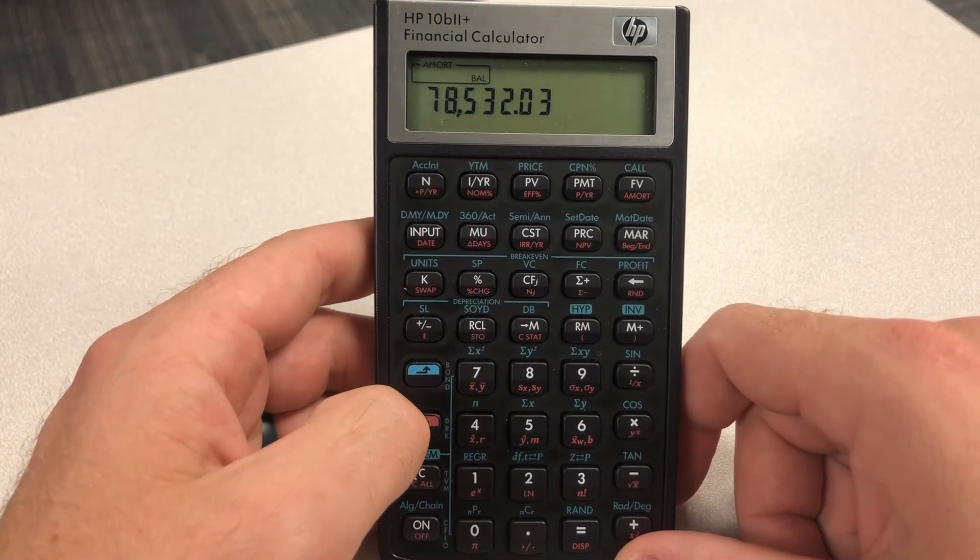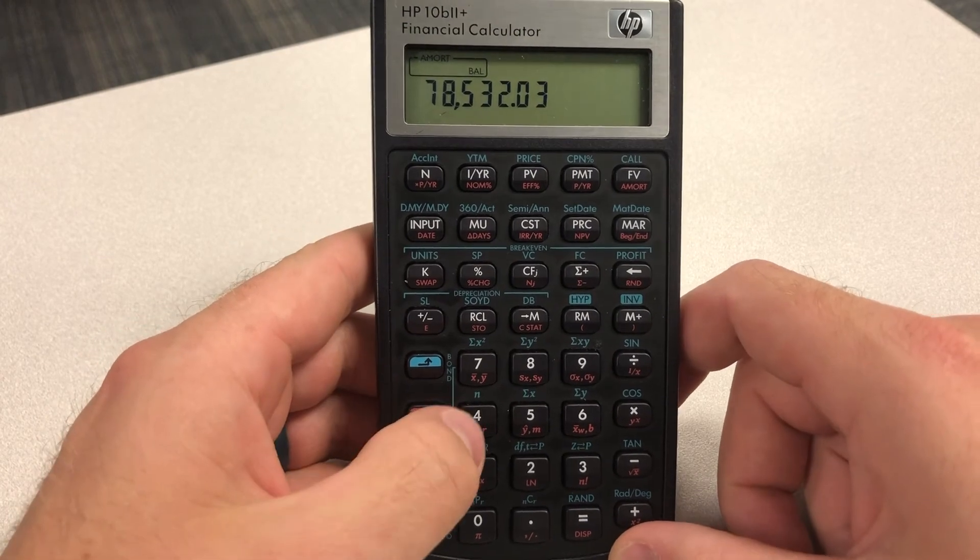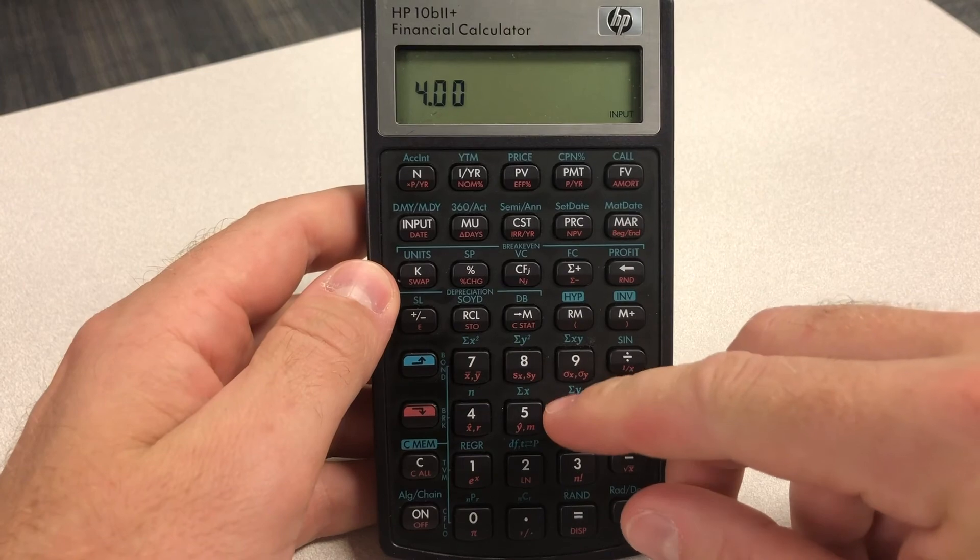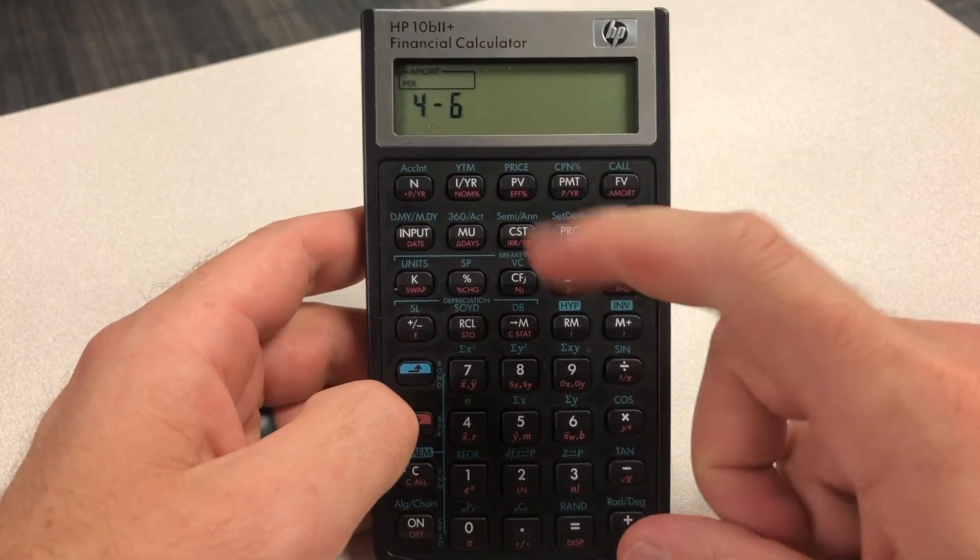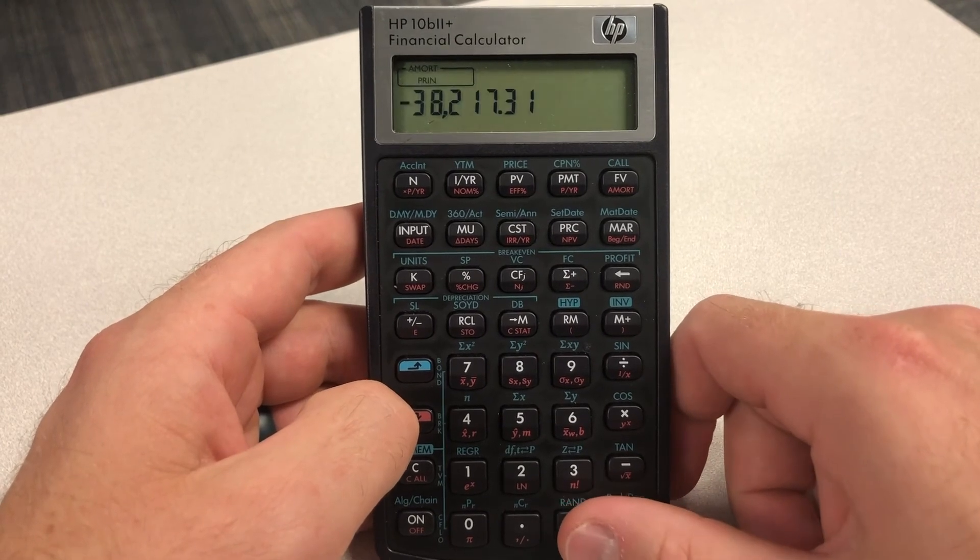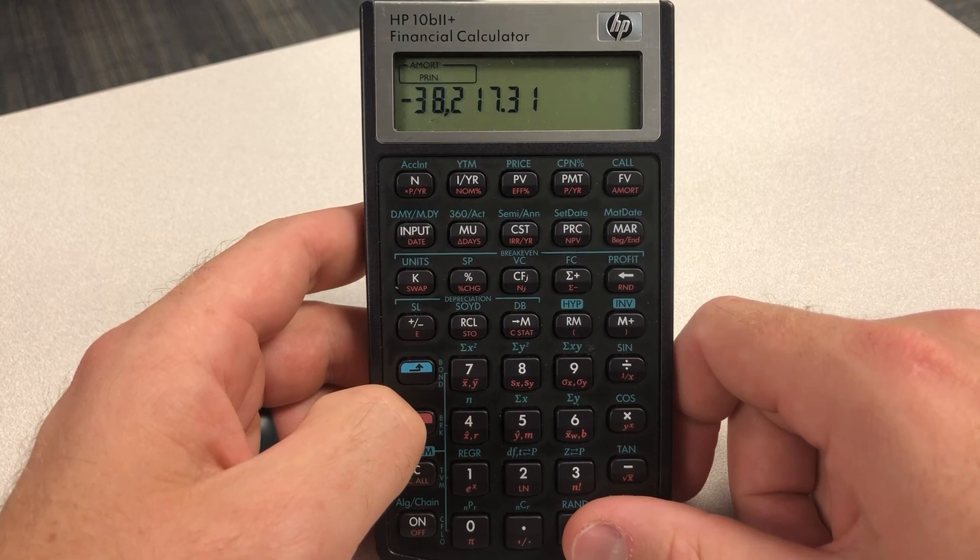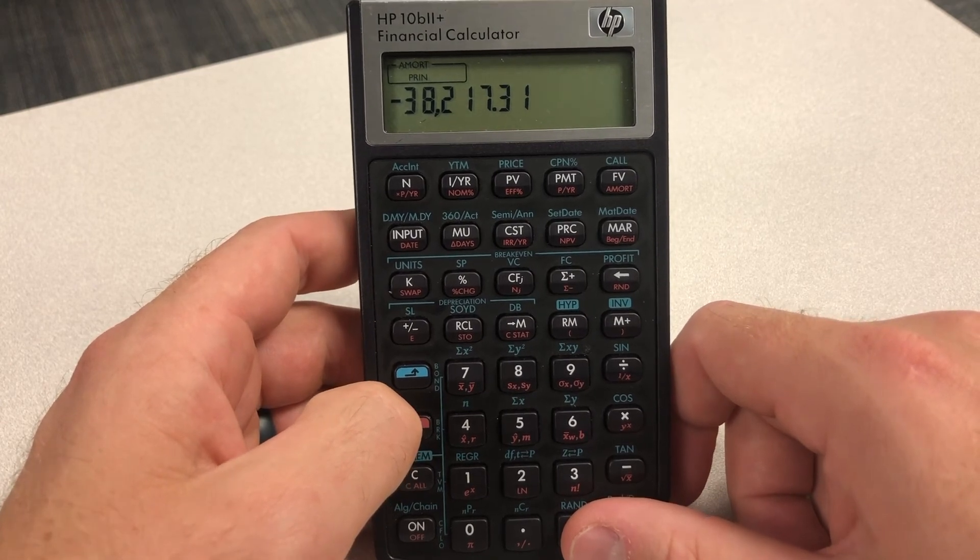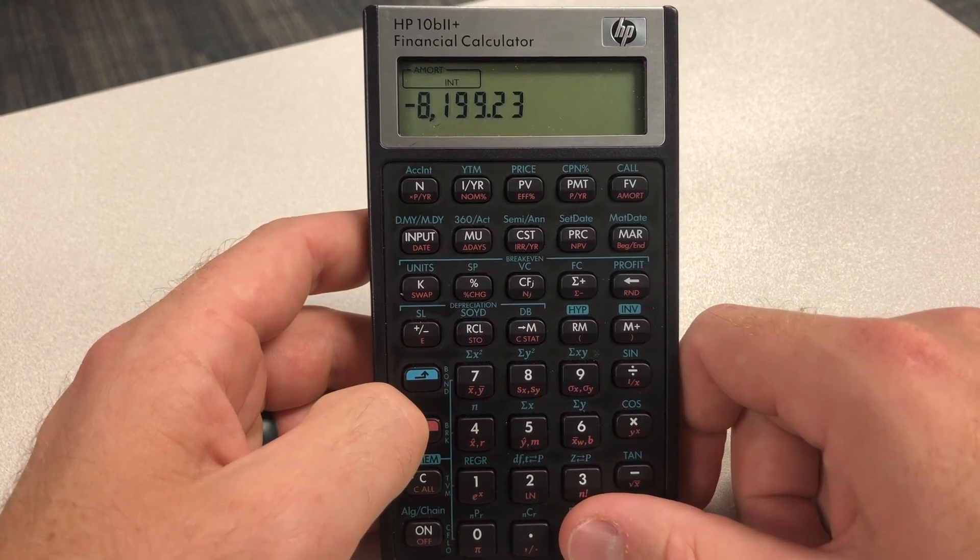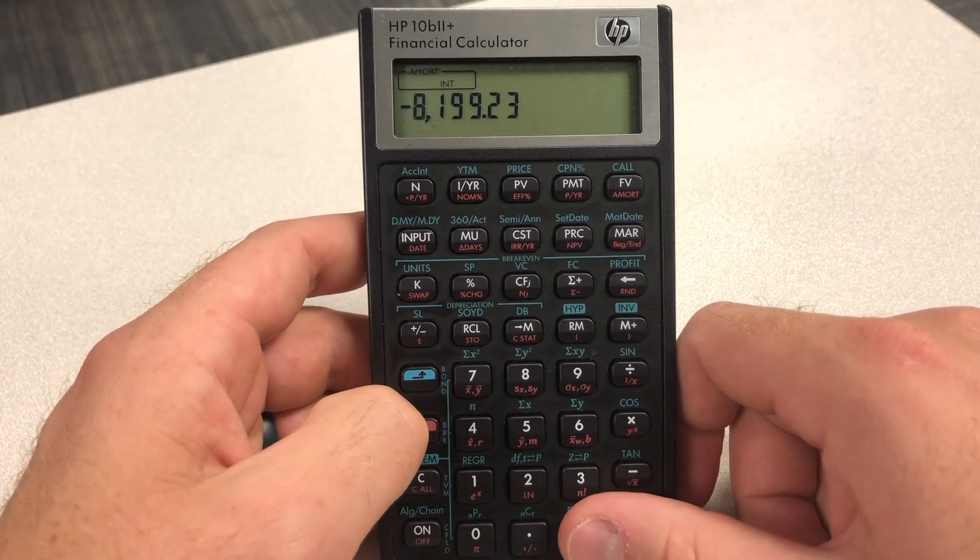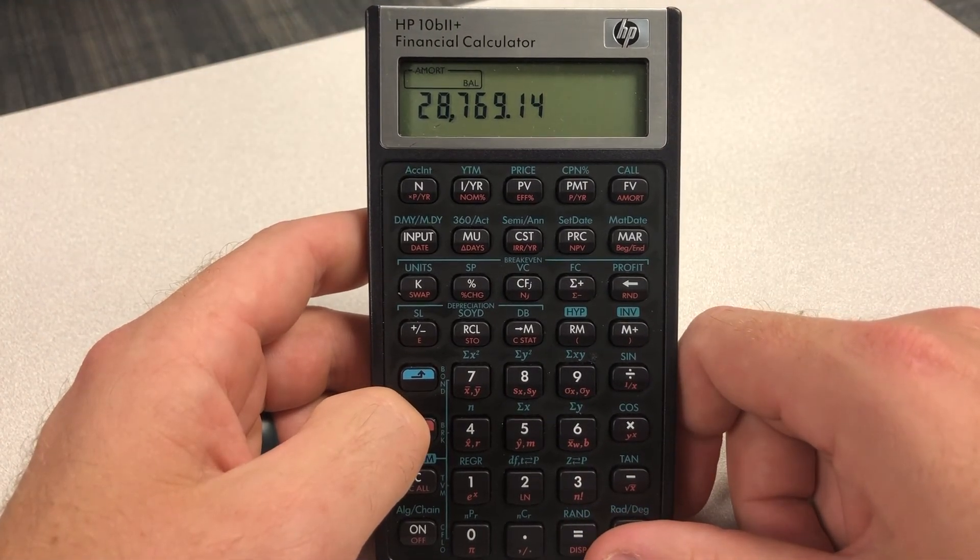Now let's see if we want to figure out, we just care about periods four through six. Again, we're going to hit four, input, six, shift, amortization, and that's going to give us our periods four through six. And then we hit equals. $38,217.31 is the principal we've paid. The interest we've paid during year four through six is $8,199. And the balance is, at that point, so mind you, this is still accounting for the prior year.